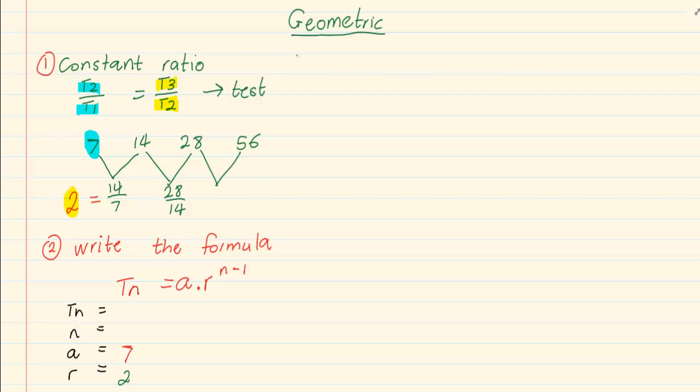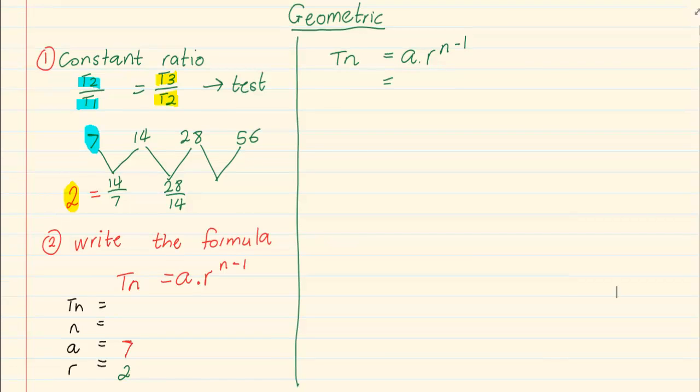Then we go to our formula and we simply substitute. So we have Tn is equal to 7 times and then R is 2 to the power of N minus 1. And that is your formula.